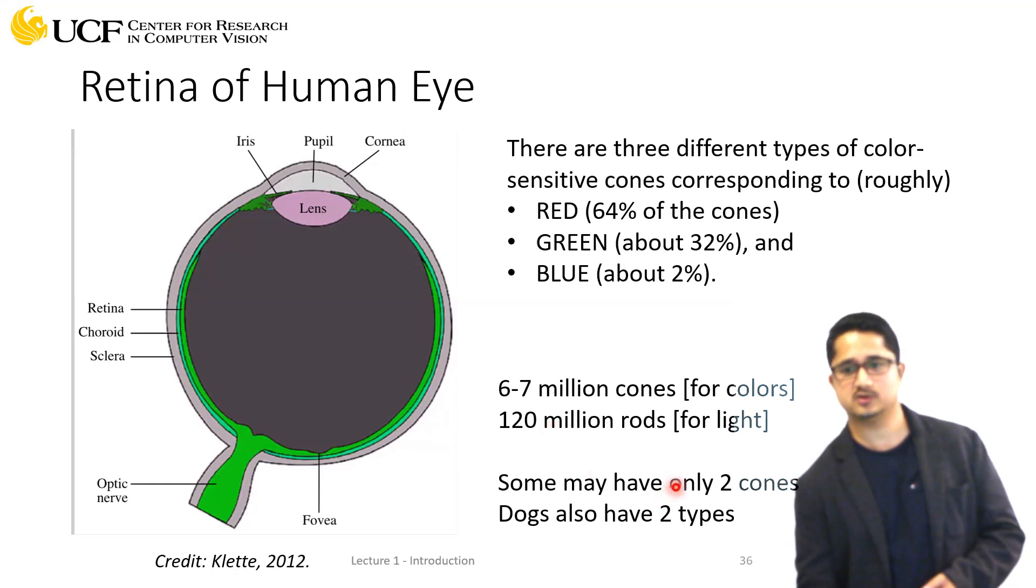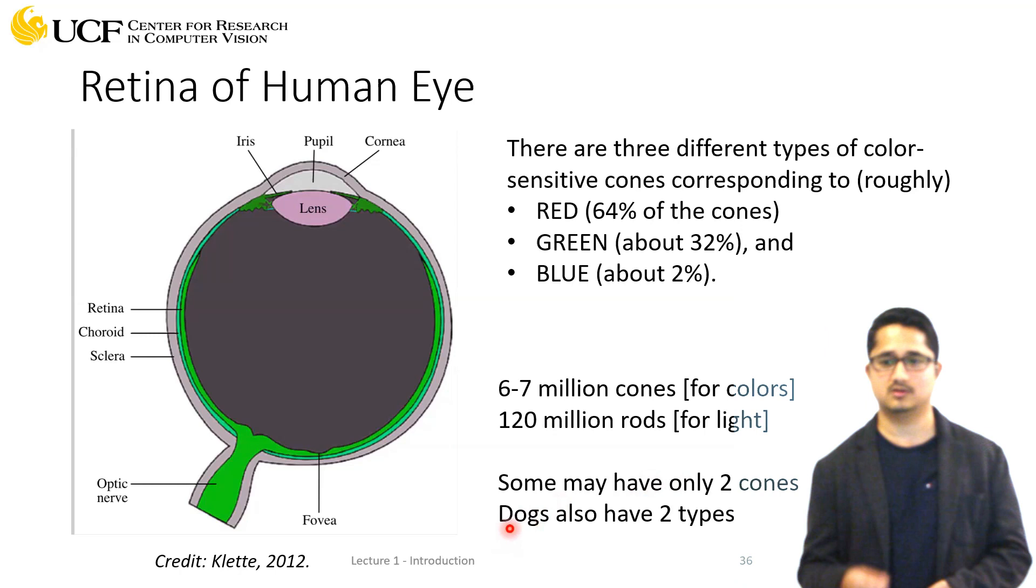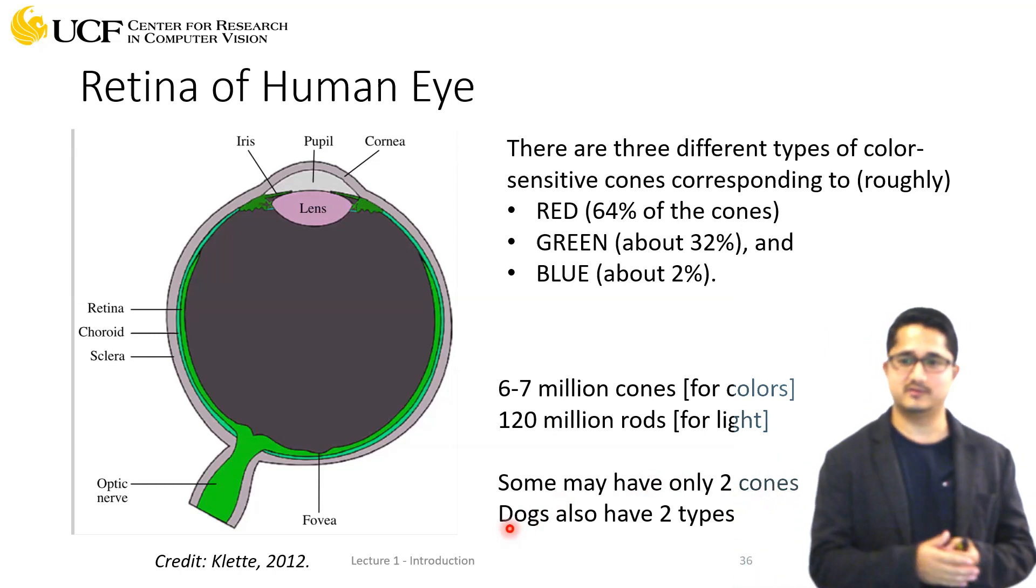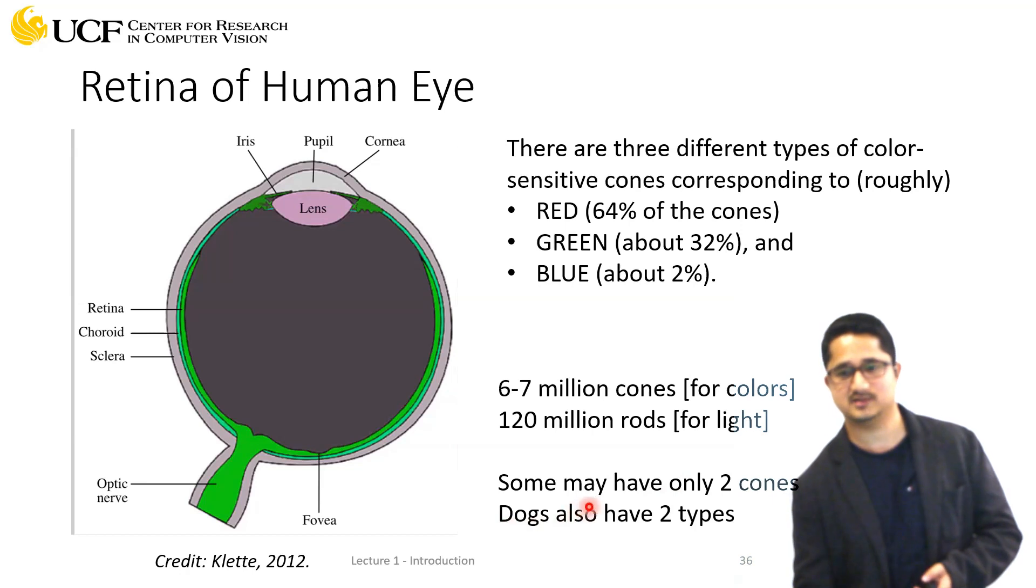Some humans only have two cones. Interestingly, dogs also have just two types of cones. Those who have only two cones have vision similar to dogs.